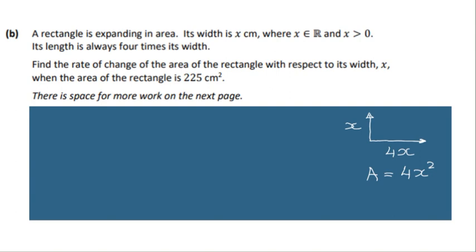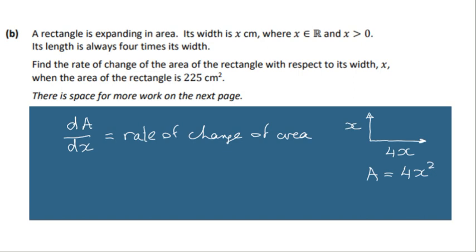We have our function now — our formula for area — which will generate a graph of area. So let's differentiate that. We can write dA/dx, which is equal to the rate of change of area with respect to the width x. If we differentiate 4x² and apply the differential rule, we will get 8x. That's our rate of change formula and it gives the slopes of the tangent off the graph.